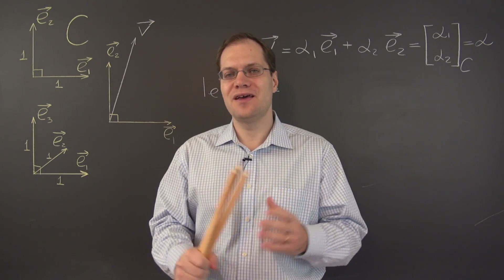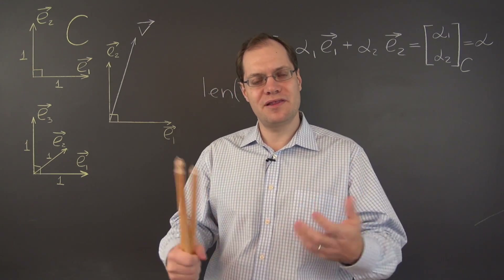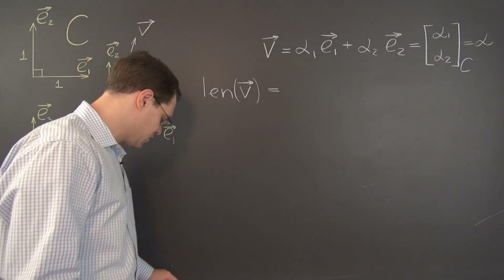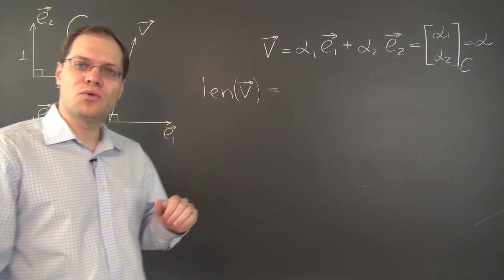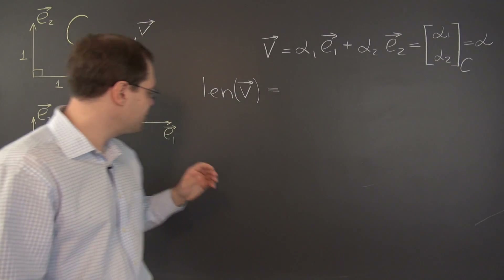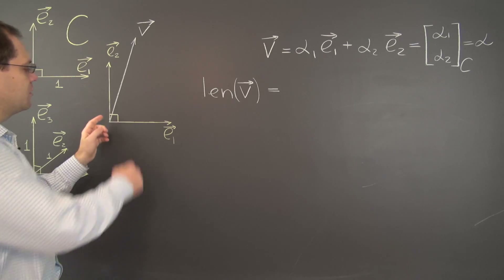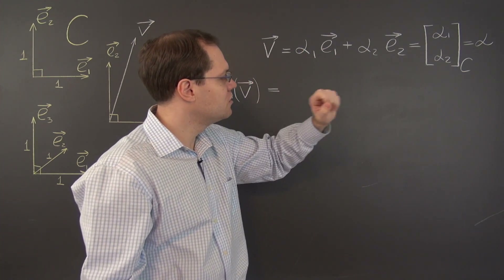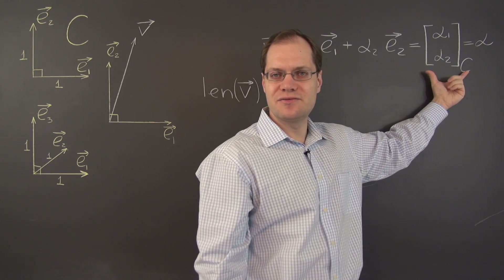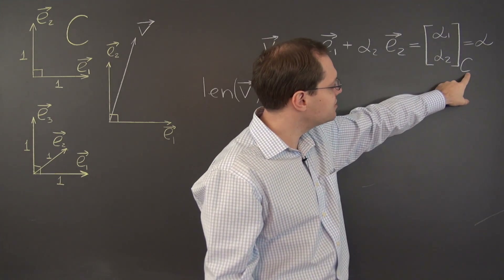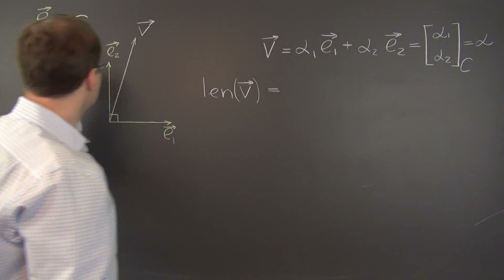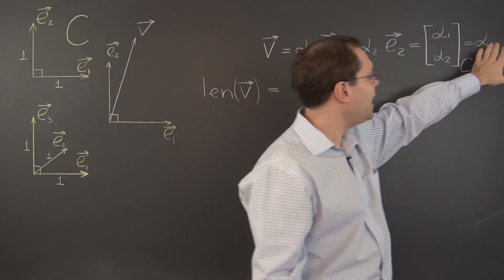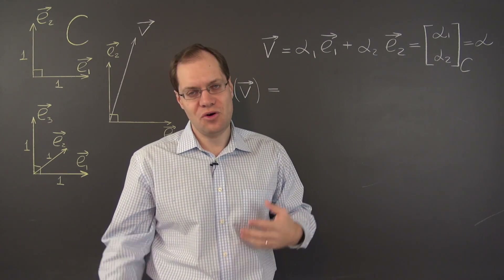Let's now talk about the length of a vector and derive the famous formula. The key to the derivation will be the Pythagorean theorem, which is made possible by the 90-degree angle from the Cartesian basis. Here's the setup: we have a Cartesian basis C and a vector V decomposed with respect to this basis, with components alpha_1 and alpha_2. We organize these into a pair of values — an element of R², which I'm calling alpha, with a subscript C to indicate these are the components with respect to the Cartesian basis C.